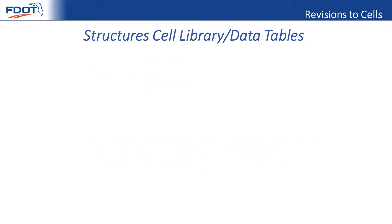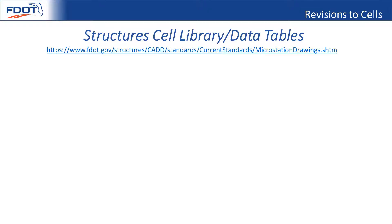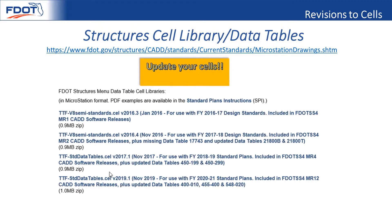Now for changes to the cell library. Most of these were made for very small changes, but please make sure you update your cells because there are a lot of them. The State Materials Office requested that we replace our list of silica fume, metakaolin, and ultrafine fly ash with highly reactive pozzolans. So we made that change across a whole lot of different cells.